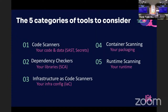Starting with our first topic: we have five categories of tools we need to consider. When thinking about developer-related security, this is what needs to come to mind. Code scanners, to protect our code and data — such as SAST and secret detection. Dependency checkers to cover our libraries. Infrastructure-as-code scanners to protect and validate our infrastructure configuration. Container scanning to protect our packaging. And finally, runtime scanning to ensure we're covered and safe at runtime as well.